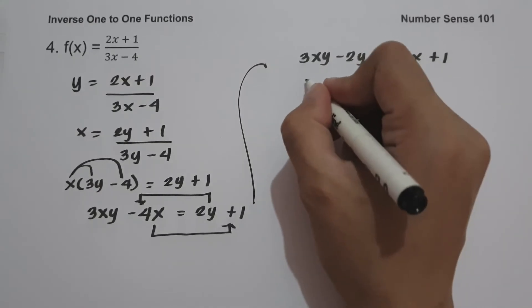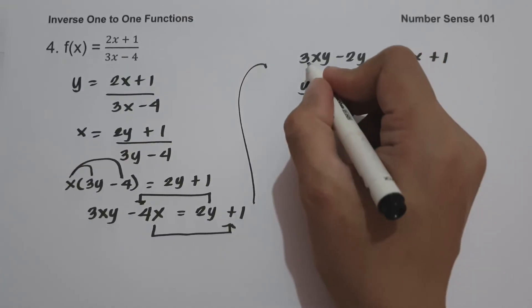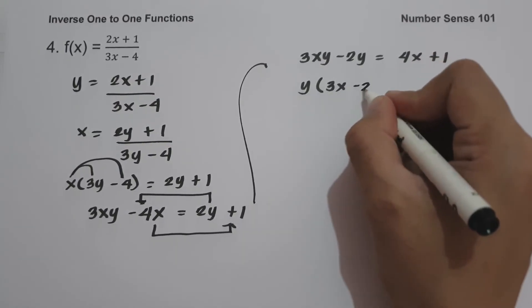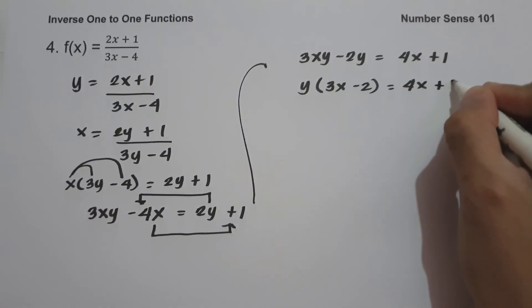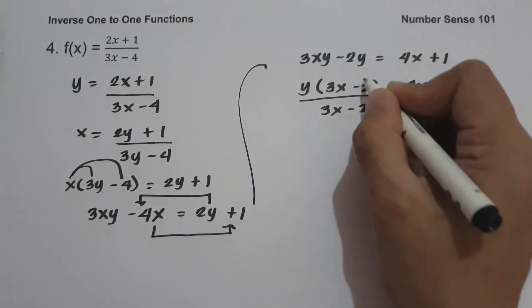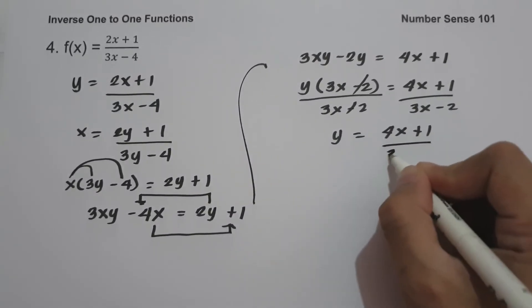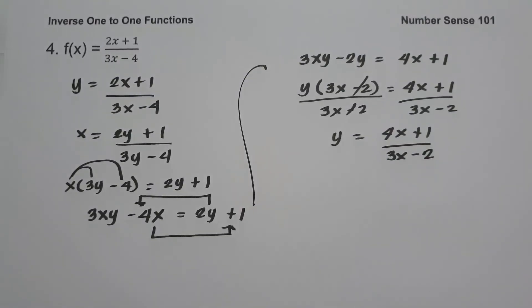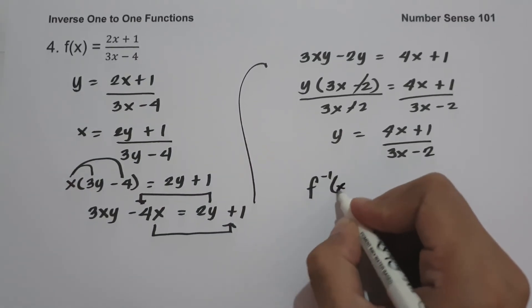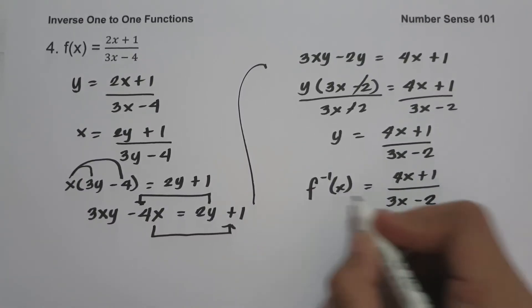Factor the left side: the GCF of 3xy and -2y is y, so y(3x - 2) = 4x + 1. Divide both sides by (3x - 2) and cancel. So y = (4x + 1)/(3x - 2). Therefore, the inverse of f(x) = (2x + 1)/(3x - 4) is f⁻¹(x) = (4x + 1)/(3x - 2), and this will be our answer.